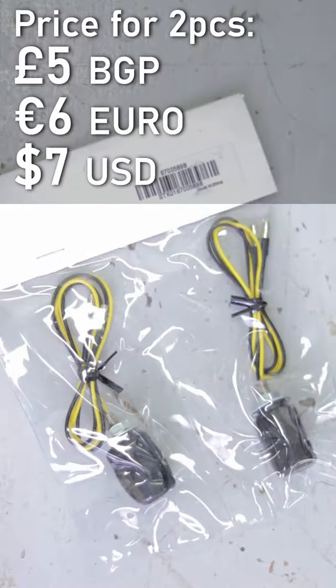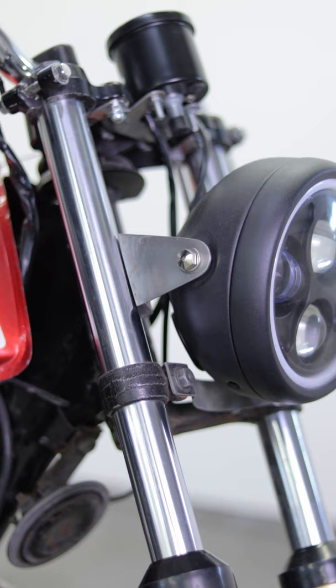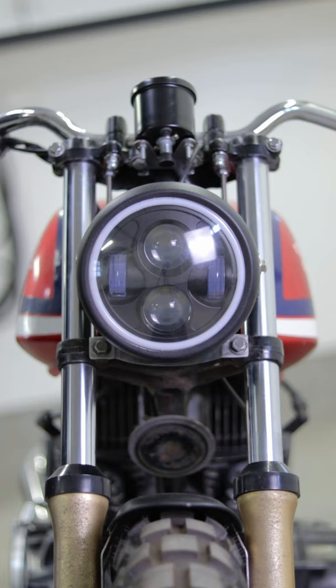I bought these inexpensive turn signals for my cafe racer. They're very small. My first plan was to drill a hole in the headlight brackets and put them there, but then I thought I could use the mounting for the headlight, which would also hide the wiring.